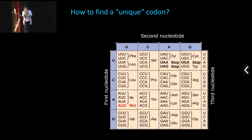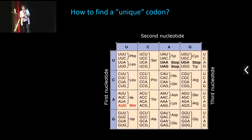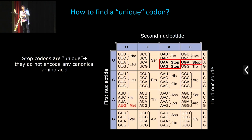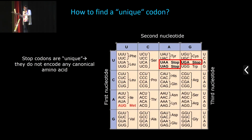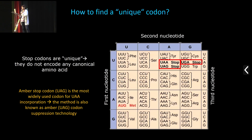Similarly, tRNA synthetase pairs from bacteria can be introduced in eukaryotes where they will also be orthogonal. You also need to make these synthetases specific for the unnatural amino acid you want to incorporate. Finding a unique codon is even more challenging: of the 64 codons, 61 are already taken by canonical amino acids. There are three stop codons, and the trick is to re-assign one of these to the incorporation of the unnatural amino acid. The amber codon UAG is the most widely used — that's why this method is also called amber codon suppression technology.